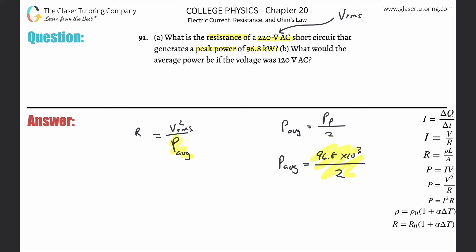The resistance here becomes the root mean square voltage of 220 squared, divided by 96.8 × 10³ all over two. So: 220 squared divided by parenthesis 96.8 × 10³ divided by two, and we get a value of 1.1 ohms.